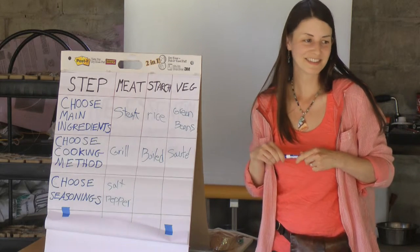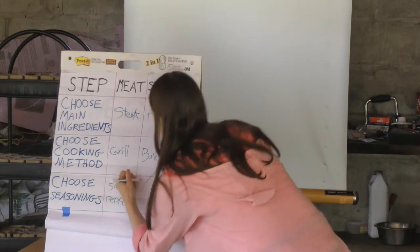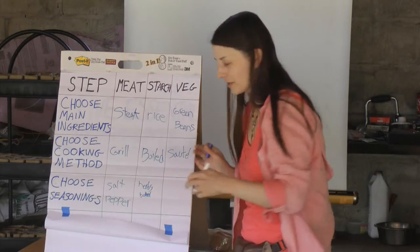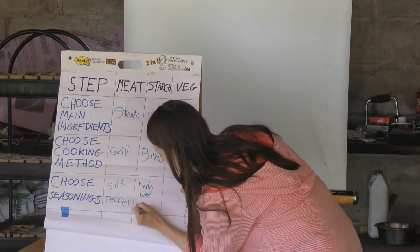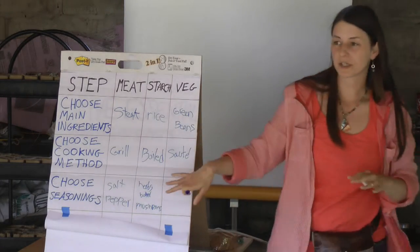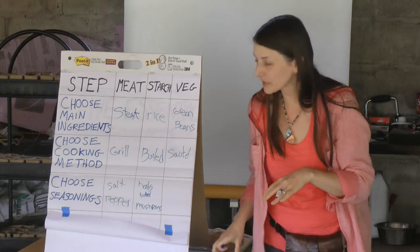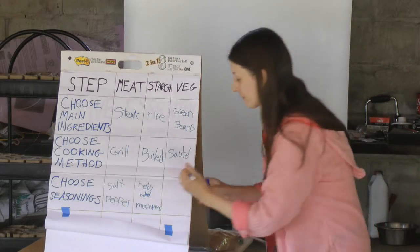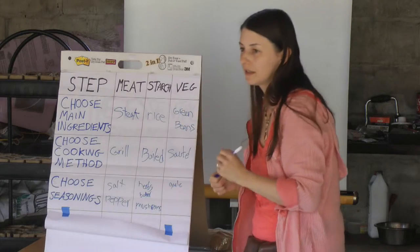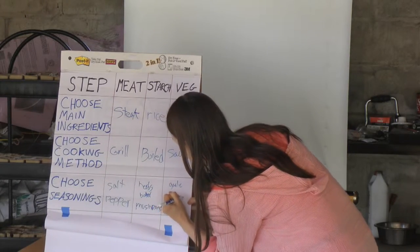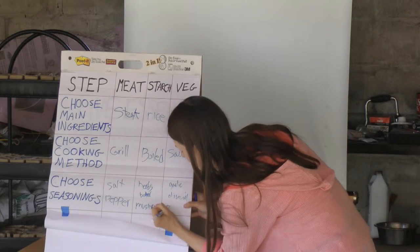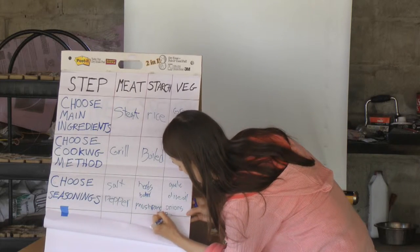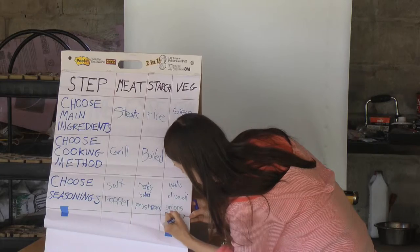Butter — any other ideas? Some herbs. I'm going to add one more thing: let's add mushrooms. I know you really can't read that at all, but it says mushrooms. Now for the green beans — we're sautéing them; that was your idea. What are we going to put with the green beans? Garlic. What kind of oil? Olive oil. Anything else? Onions. I'm going to throw in one more thing — how about some balsamic vinegar?